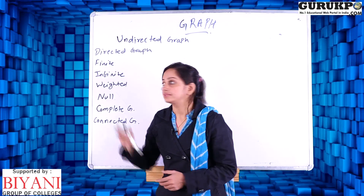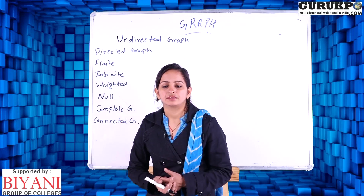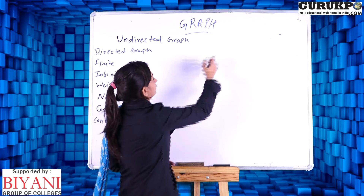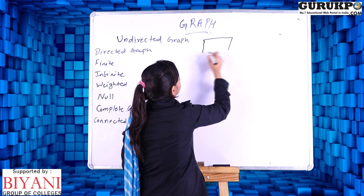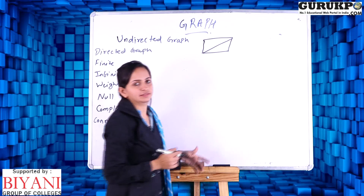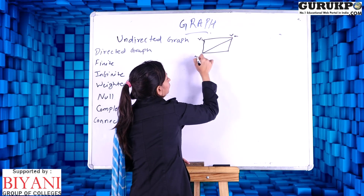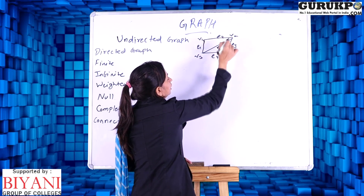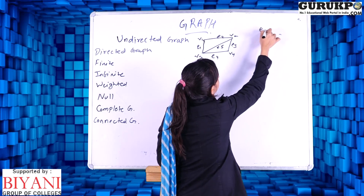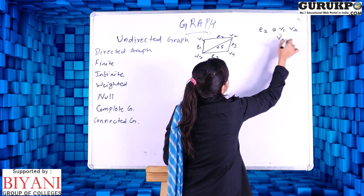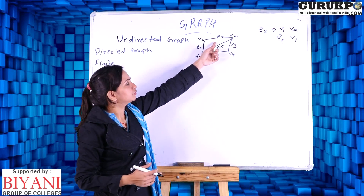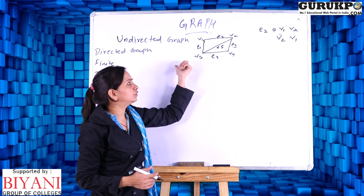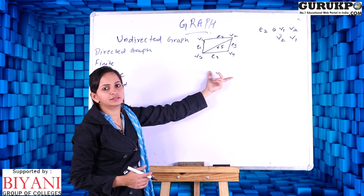Let us discuss these two types first. What is the undirected graph? An undirected graph is what we have seen in last examples, in which there is no direction. That means if I am drawing a graph like this, this is an undirected graph because there are vertices V1, V2, V3, and V4, and edges E1, E2, E3, E4, E5. If I say edge E2 is from V1 to V2 or from V2 to V1, there is no difference because direction is not specified.